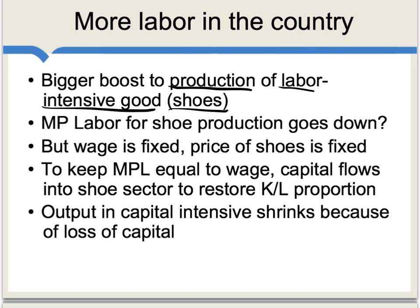Think about the ratio of capital to labor in shoe production. It's now the case that the marginal product of labor (MPL) for shoe production goes down, because we now have a higher ratio of labor to capital in shoe production. The more labor you have relative to capital, that means a lower marginal product of labor — at least that would be the case if factor prices were allowed to change. But recall our assumption that the wage is fixed. Prices are fixed, including the price of shoes. So we need to keep the MPL equal to the wage.